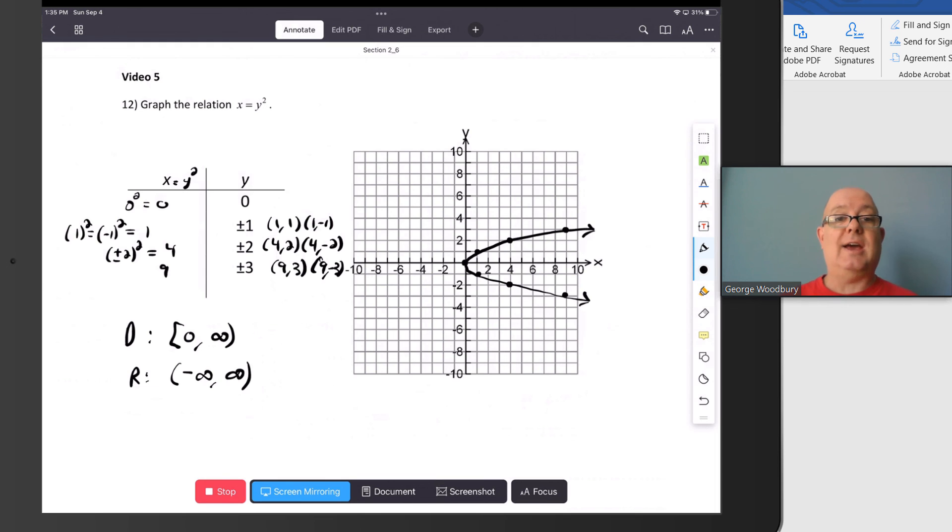That is the relation x equals y squared, really similar to y equals x squared. But again, the ordered pairs are inverted and the graph heads to the right instead of up.